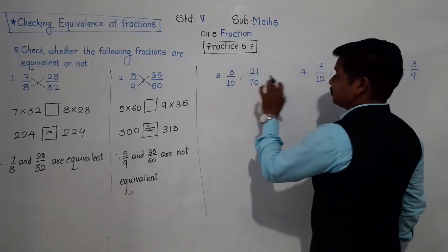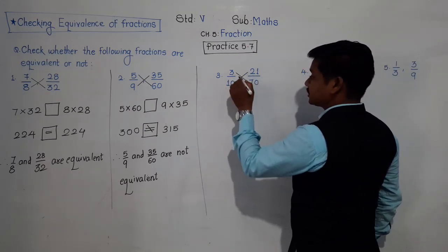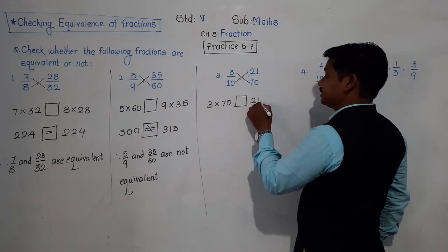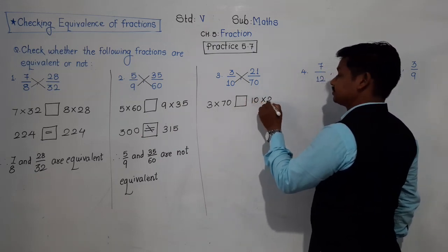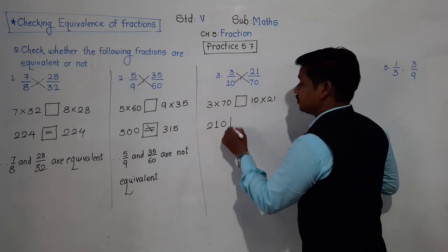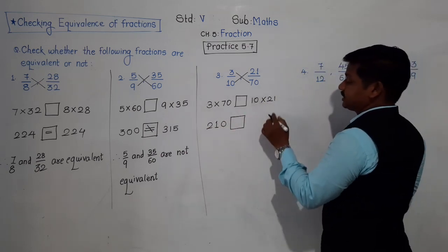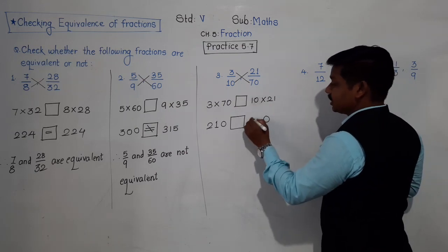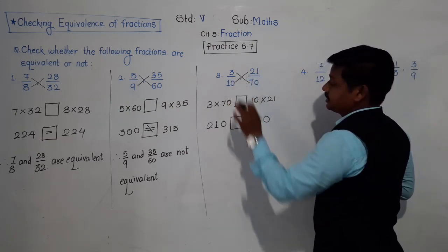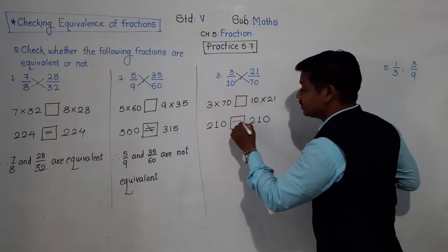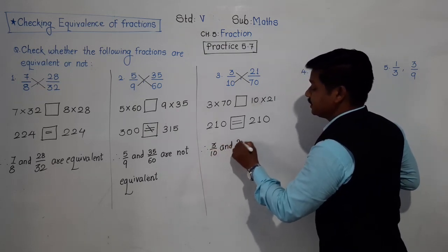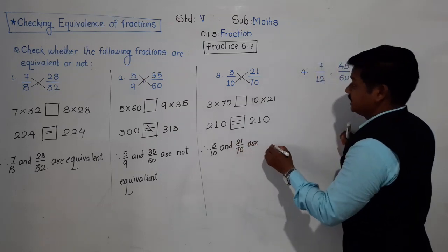Next: 3 upon 10 and 21 upon 70. Let's do the cross product: 3 into 70 — 3 zeros are 0, 3 sevens are 21, so 210. And 10 into 21 — 10 ones are 10, giving 210. Both products are 210, they are equal. So 3 upon 10 and 21 upon 70 are equivalent.